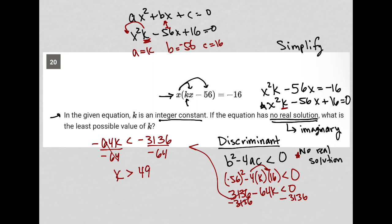The least possible value of k is 50, because if k > 49, then the smallest integer k can be is 50. So 50 is the correct answer.